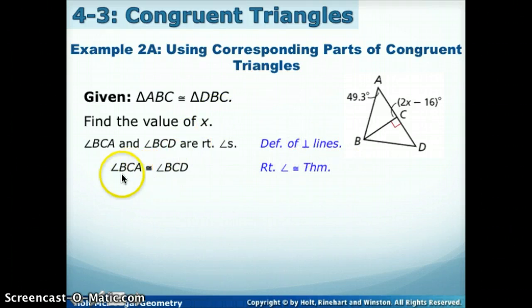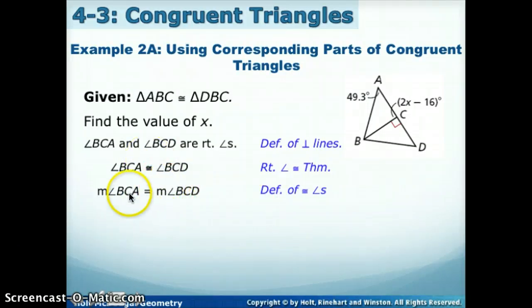So if their angles are congruent, what does it tell us about their measures? Or what does it mean to be congruent? It means that their measures are equal. So the measure of BCA is equal to the measure of BDC.